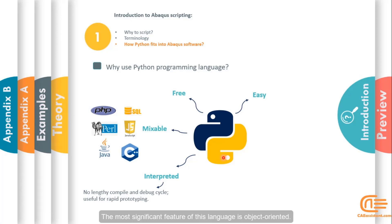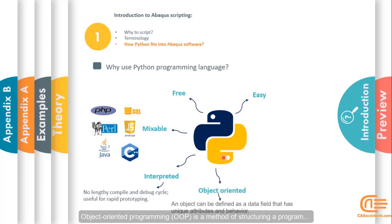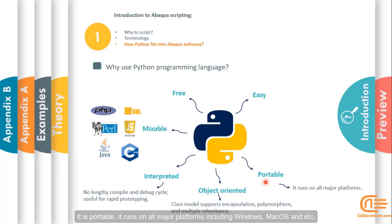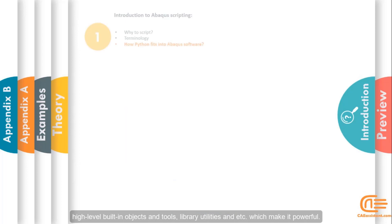The most significant feature of this language is object-oriented. Object-oriented programming, OOP, is a method of structuring a program by bundling related properties and behaviors into individual objects. It is portable. It runs on all major platforms including Windows, Mac OS, etc. It is powerful. Python incorporates dynamic typing, high-level built-in objects and tools, library utilities, etc., which makes it powerful.